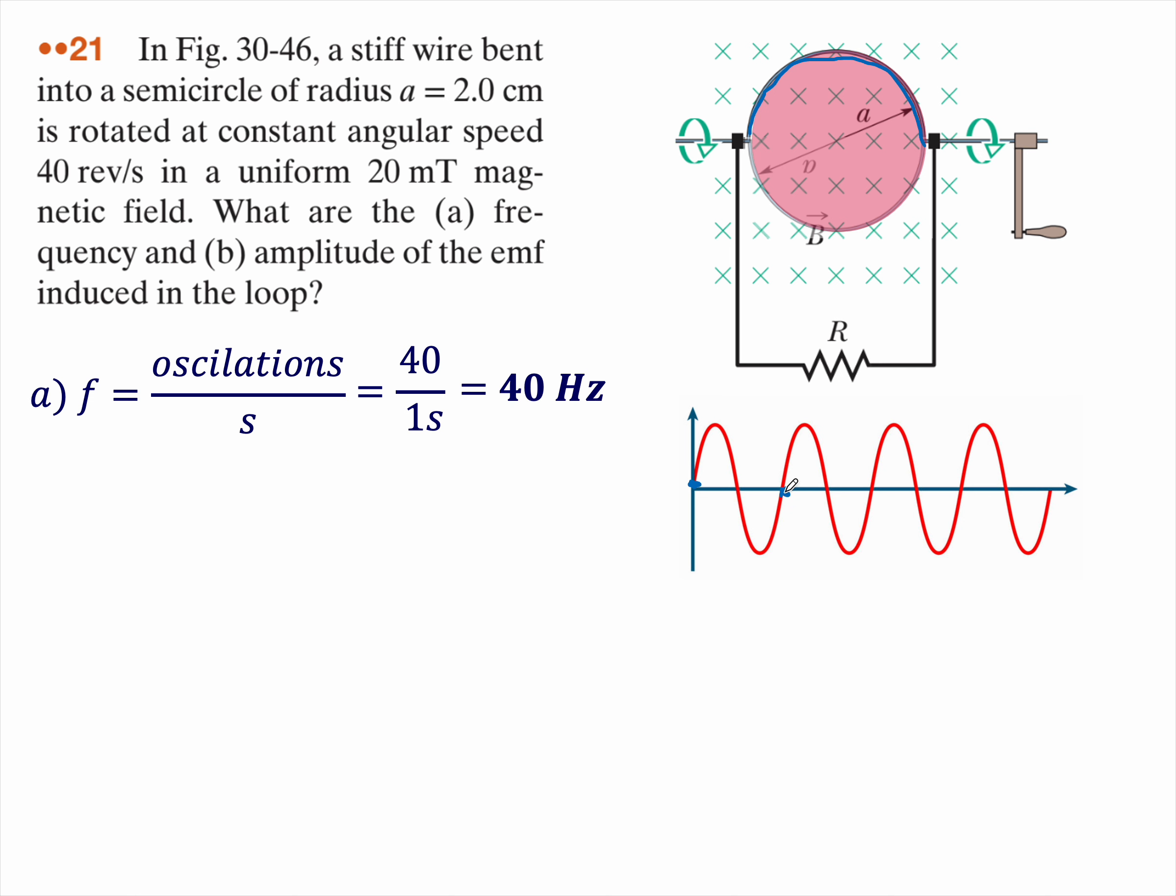So what's the frequency? Well, it's just 40 hertz. That's the answer to A. While we're on it, I'm going to go ahead and calculate the period. Remember, period is the reciprocal of frequency. So in this case, 1 over 40, or 0.025 seconds.